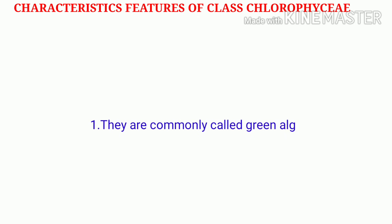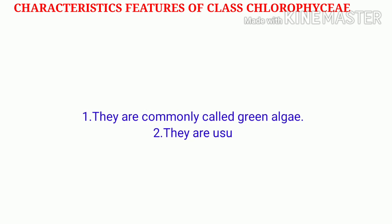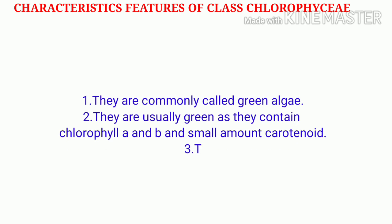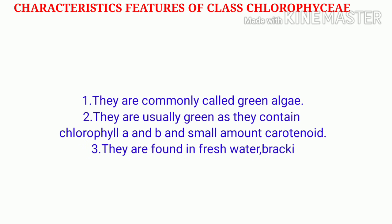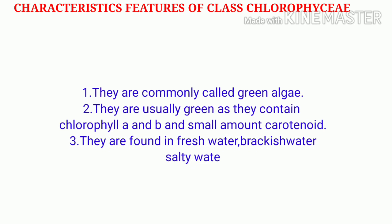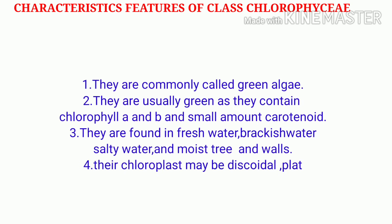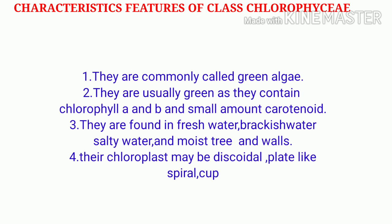What are the characteristic features of Class Chlorophyceae? The first feature is that they are commonly called green algae. They are usually green in color. They contain Chlorophyll A and B, and a small amount of carotenoids, located in chloroplasts.